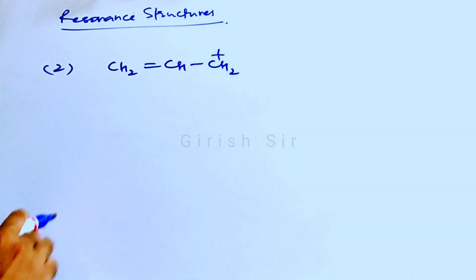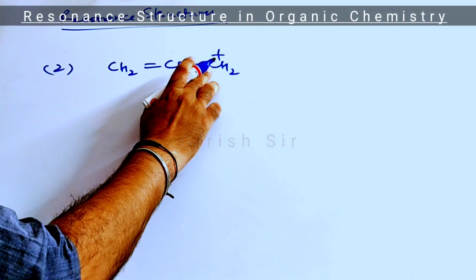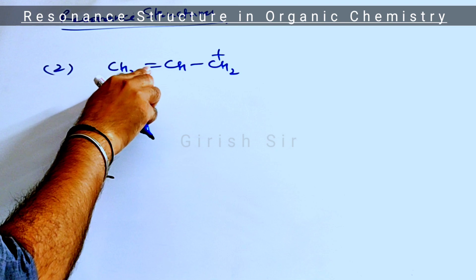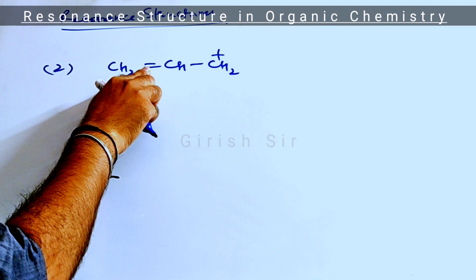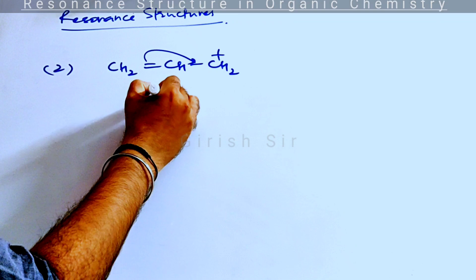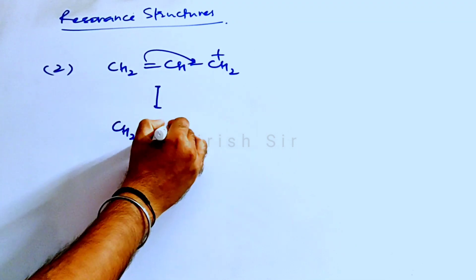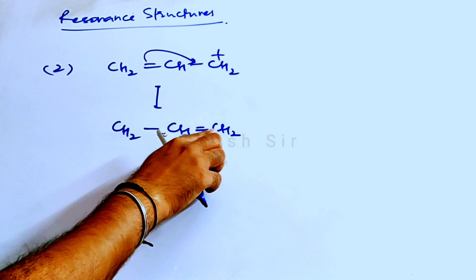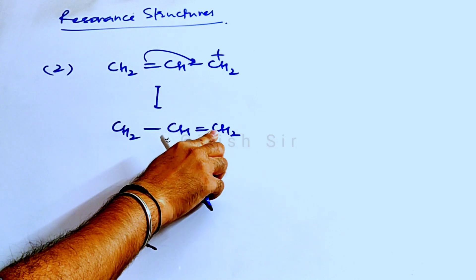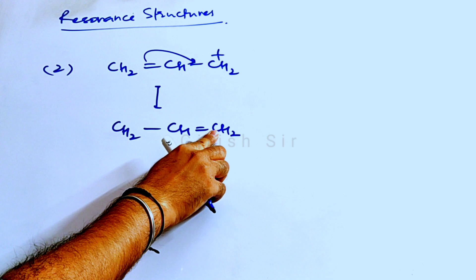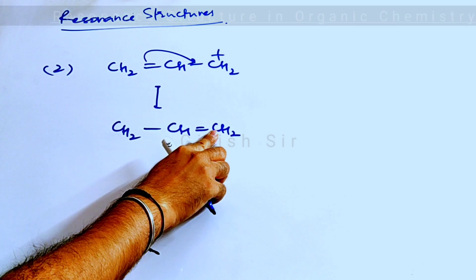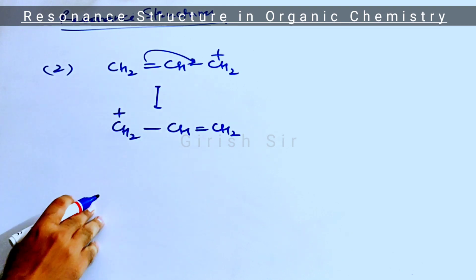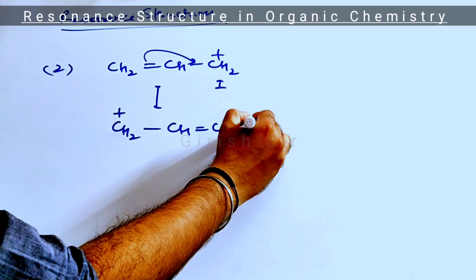Here we have a positive charge on carbon. If you look carefully, this carbon is forming three bonds and is an electron-deficient carbon. In this case, the pi electrons of the pi bond will move towards the plus charge, forming a pi bond here. As a result, this carbon now has a complete octet and is no longer electron deficient. The plus charge disappears from this carbon, but as this carbon is losing two electrons, a plus charge appears here. So we get two resonance structures in this case.